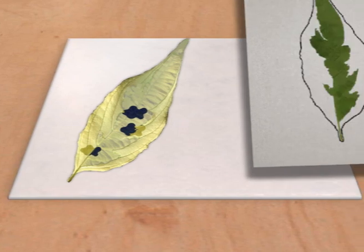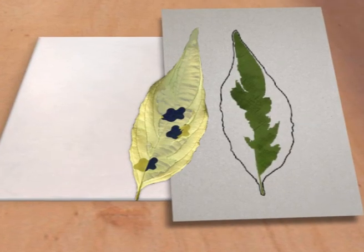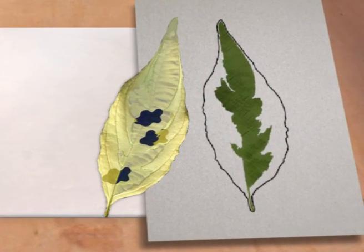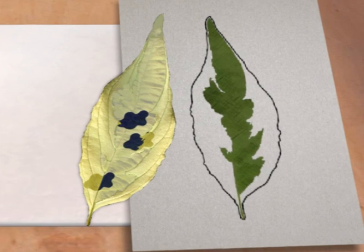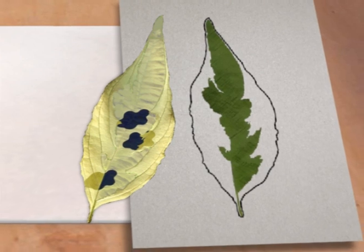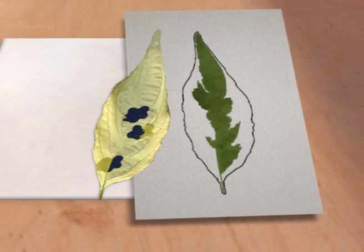Only the green parts of the leaf turn blue-black when a few drops of iodine solution are added. This shows that only the green parts of the leaf carry out photosynthesis to produce starch. So, chlorophyll is needed for photosynthesis.